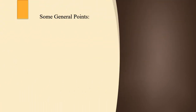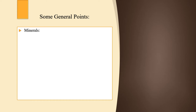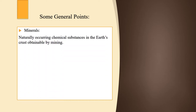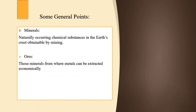We will start with some general points. First is minerals — they are naturally occurring chemical substances in the earth's crust, obtainable by mining. Next is ores — those minerals from which a metal can be extracted economically are known as ores.